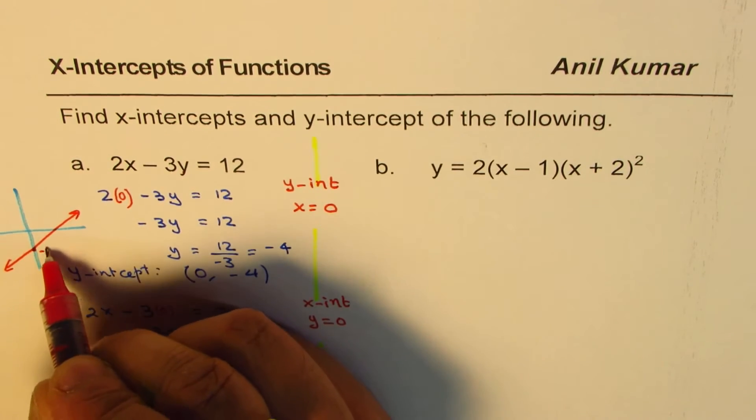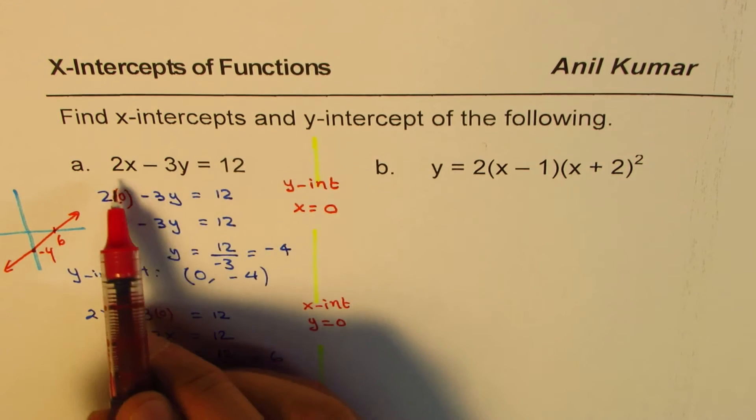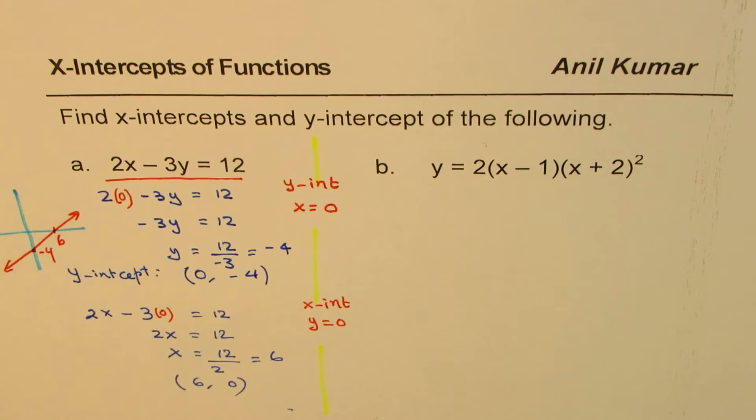Let's say minus 4, x-intercept of 6, so this is somewhere there. A line like this where this is minus 4 and that point is 6, it represents the given line 2x minus 3y equals 12.